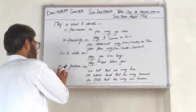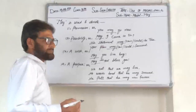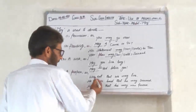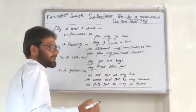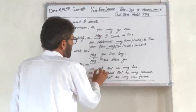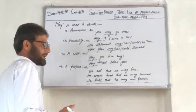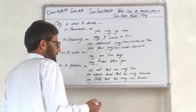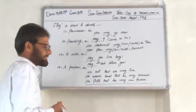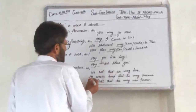Number four — A Purpose. جس sentence میں ہمیں کسی مقصد کا اشارہ ملے، تو وہاں پے بھی Modal May کا استعمال لازمی ہے۔ جیسے: 'We eat that we may live.' ہم زندہ رہنے کے لیے خوراک کھاتے ہیں — زندہ رہنا ہمارا مقصد ہے، اس لیے ہم نے May کا استعمال کیا۔